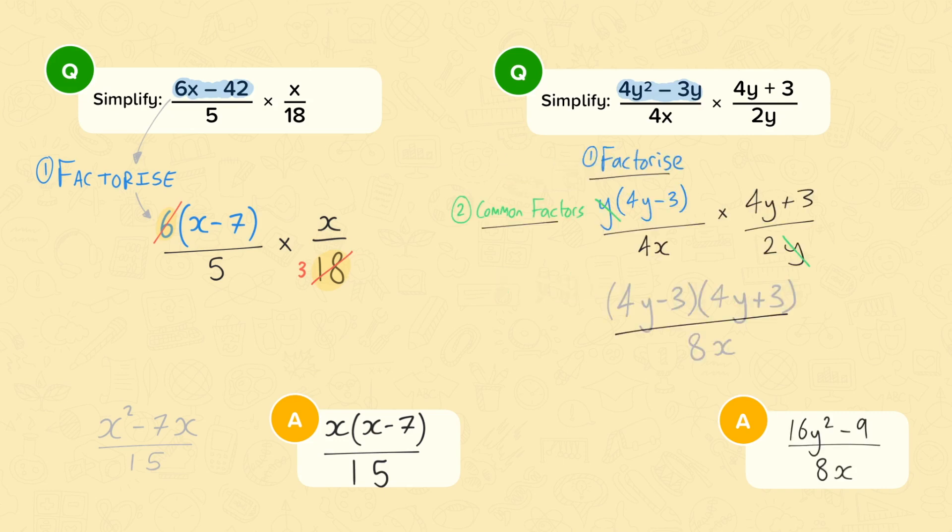Very well done if you got a final answer of 16y squared minus 9 over 8x. Our first step was to factorise this numerator.